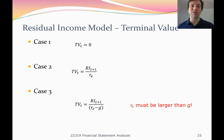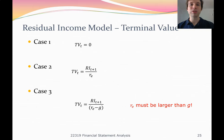The residual income model has three terminal value assumptions. Case one: terminal value equals zero, meaning the company is no longer earning above its cost of capital — not necessarily bankrupt, but perhaps in a highly competitive industry approaching perfect competition, where companies earn only a return equal to their cost of capital. A terminal residual income of zero under this model doesn't mean failure; it means no abnormal earnings.